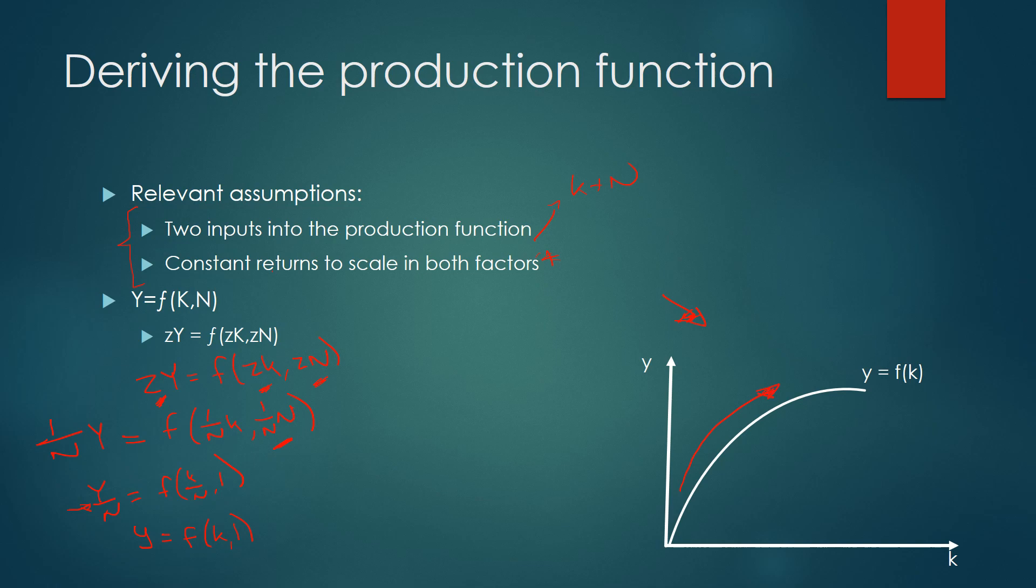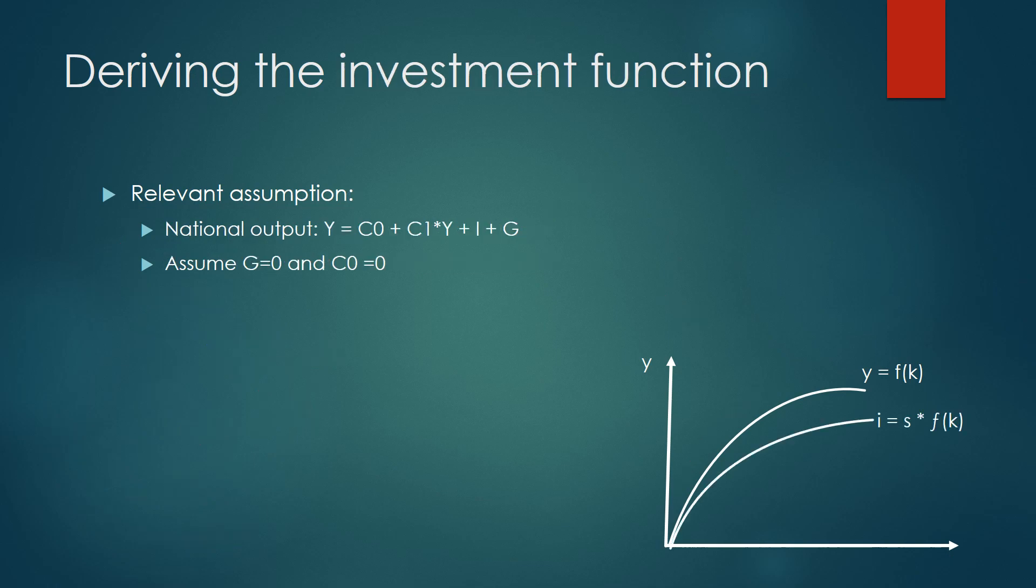So now we're going to move on to the investment function. Now the investment function, as you can see on this diagram here, is simply just a movement down of the production function. So how do we get this production function?